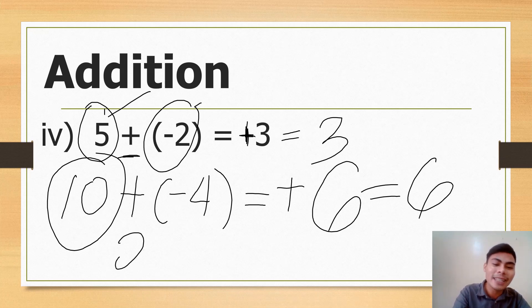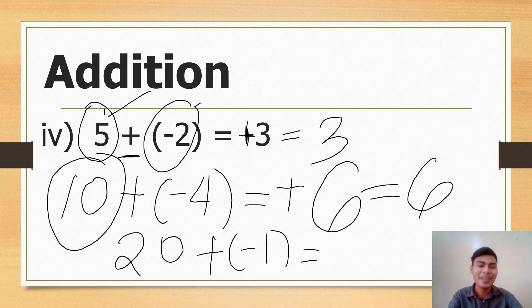So at home: 20 plus negative 1. Pause nyo muna if gusto nyo. Again, we are adding different sign, a positive and a negative. Again, subtract. 20 minus 1? 19. Tapos si 20 ay mas malaki kay 1, of course. At si 20 ay positive. So copy 20.